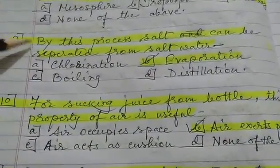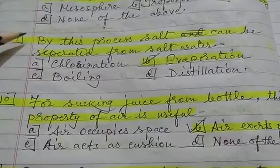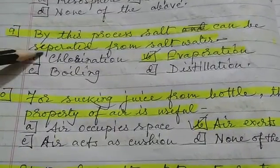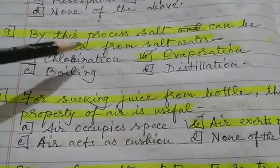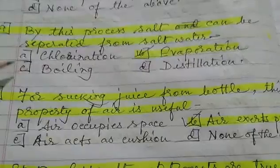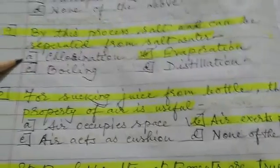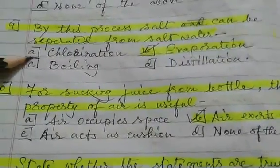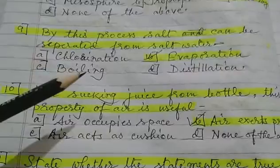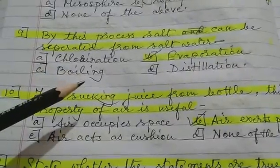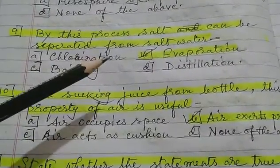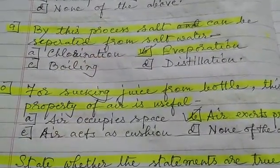Question 9: by this process salt can be separated from salt water. A) chlorination, B) evaporation, C) boiling, D) distillation. The answer is evaporation.